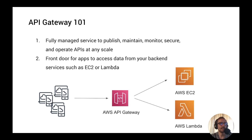First of all, the API Gateway is a fully managed service to publish, maintain, monitor, secure and operate APIs at any scale. Meaning that you don't have to worry about scaling the service — it's fully hosted by AWS — and the pricing is the classic pay-as-you-go pricing of a serverless service. You can think about the API Gateway as the front door for your applications to access data from your backend services such as EC2 instances or Lambda functions.